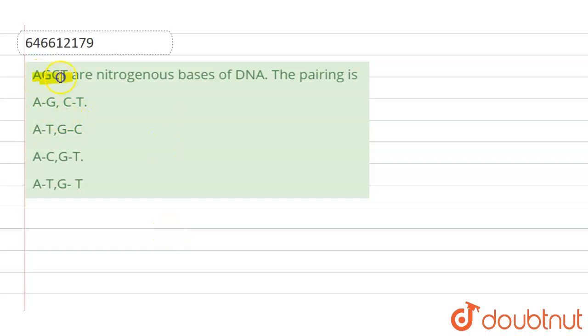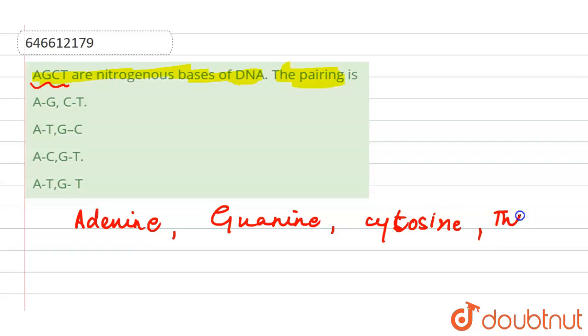So here the question is: AGCT are nitrogenous bases of DNA. The pairing is? Okay, so if we talk about the AGCT, so here our AGCT is adenine, guanine, cytosine, and thymine.